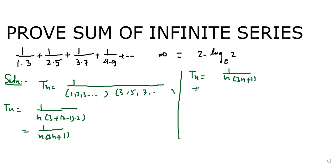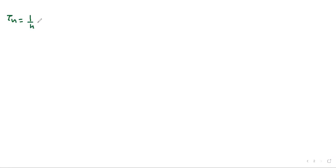Now we write this in difference form. We decompose 1/(n(2n+1)) by writing it as 1/n minus 2/(2n+1). We arrange it in this partial fraction form so that we can substitute values of n and sum the series.